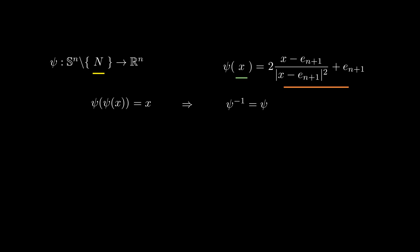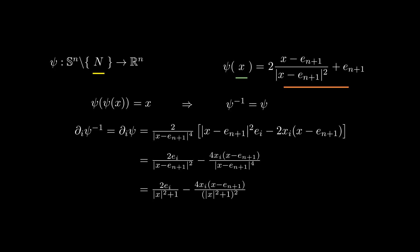Now, to compute the metric coefficients with respect to this chart, we need first the partial derivatives of psi inverse, which are the partial derivatives of psi itself. We apply the quotient rule to obtain this expression, which simplifies a little bit if we use that if x is in R^n, the norm of x minus e_{n+1} squared is the norm of x squared plus 1 by the Pythagoras theorem.